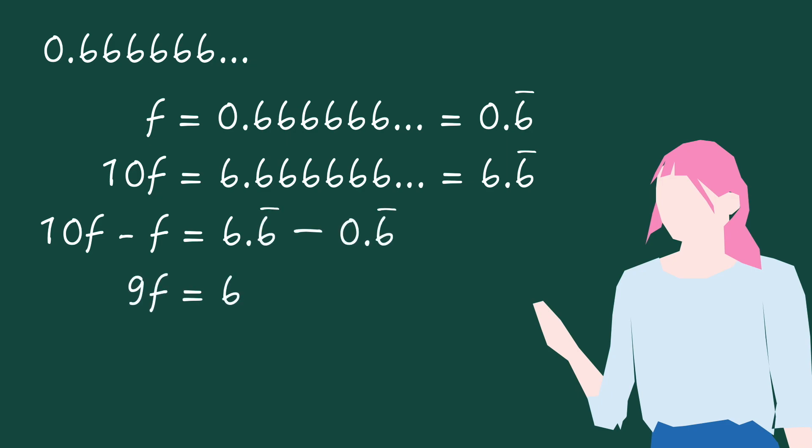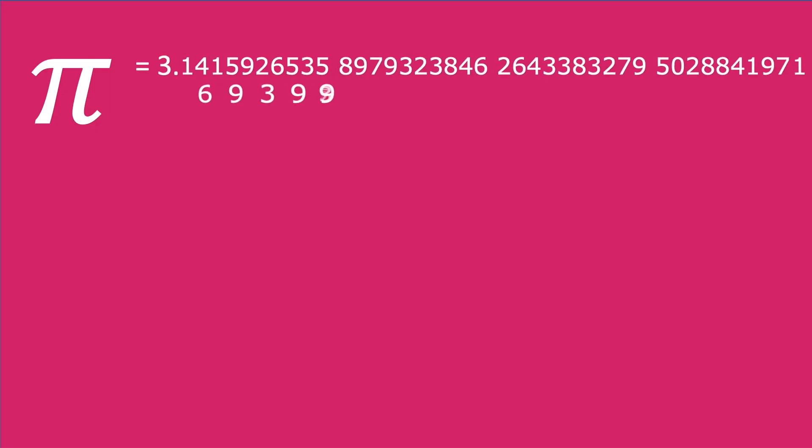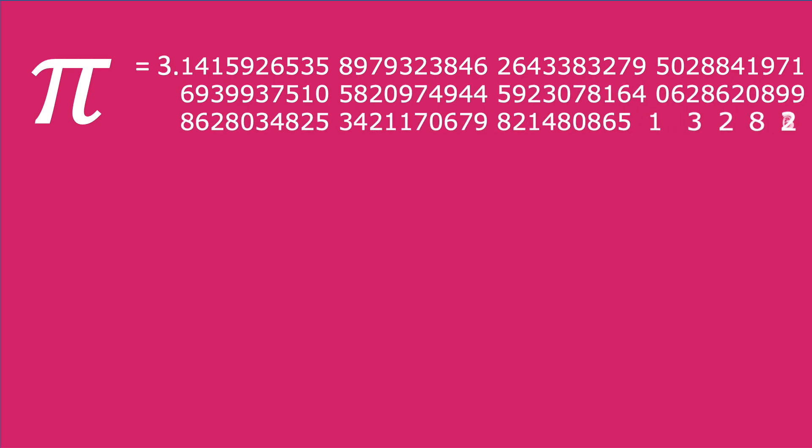But then, while all fractions can be converted to terminating or recurring decimals, and all terminating or recurring decimals can be converted to fractions, there are some special numbers which, when represented as decimals, won't terminate, and won't fall into a recurring pattern.